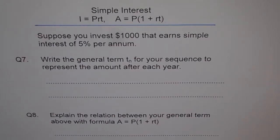And we will see simple interest from different angles. Question 7: Write the general term tn for your sequence to represent the amount after each year. So we have moved on to relate your simple interest amount with sequences. And question 8 here is explain the relation between your general term above with the formula A = P(1 + rt). So how closely they are related. Let's look into this problem now.